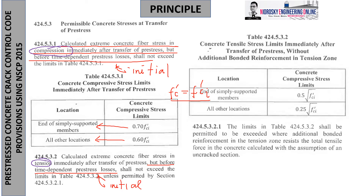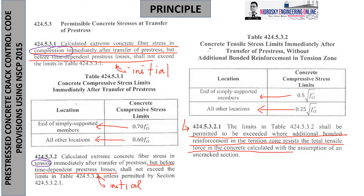The table suggests using 0.5√fc'i for the end of simply supported members and 0.35√fc'i for all other locations under tension. Per 424.5.3.2.1, these limits may be exceeded only where additional bonded reinforcement in the tension zone resists the total tensile force in the concrete, calculated under the assumption of an uncracked section. It is important to preserve the concrete under tension without cracks as much as possible.